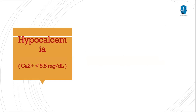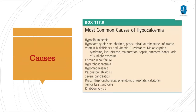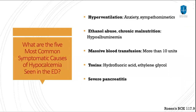Let's move on to hypocalcemia, which is a calcium level less than 8.5. The most common causes include hypoalbuminemia, hypoparathyroidism, vitamin D deficiency, chronic renal failure, hyperphosphatemia, hypomagnesemia, respiratory alkalosis, severe pancreatitis, and some drugs such as bisphosphonates, phenytoin, phosphate, and calcitonin. We also have tumor lysis syndrome in chemo patients and rhabdomyolysis. The five most common symptomatic causes seen in the ED are: hyperventilation and anxiety or sympathomimetic drugs; ethanol abuse or chronic malnutrition causing hypoalbuminemia; massive blood transfusion of more than 10 units; toxins like hydrofluoric acid, ethanol, and propranolol; and severe pancreatitis.